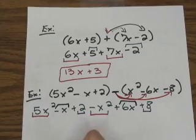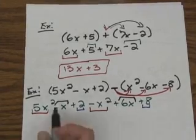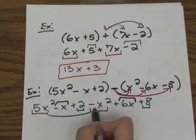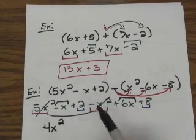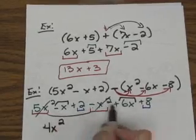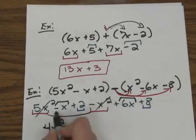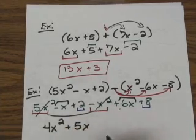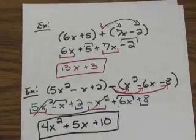When working with polynomials, always write in descending order — the term with the highest exponent first. Starting with 5x squared minus x squared: opposite signs, so subtract and take the sign of the higher number, giving 4x squared. Next, negative x plus 6x: opposite signs, 6 is highest and positive, so we get positive 5x. Finally, 2 plus 8 gives positive 10. The final answer is the trinomial 4x squared plus 5x plus 10, with no more like terms to combine.